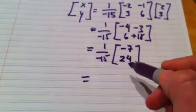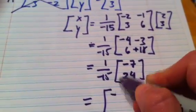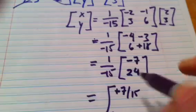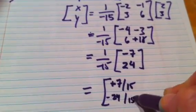So distributing the negative 15, we have negative, oh, it'll end up being positive, 7 fifteenths, and negative 24 fifteenths.